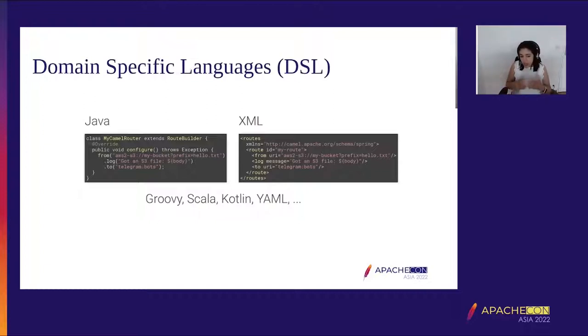All we need to do as code is this, but we add some configuration to tell Camel how to connect to that bucket, how to use the bot, and to whom to send the message. But in the integration code itself, this is all you need to do. It's very quick.